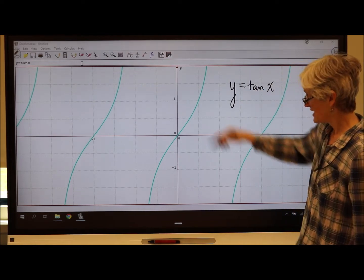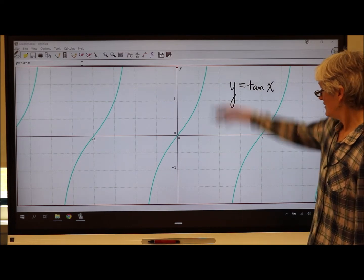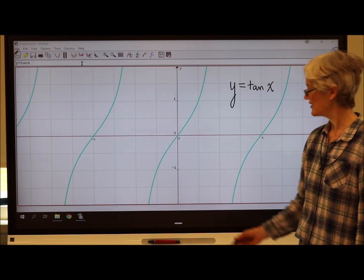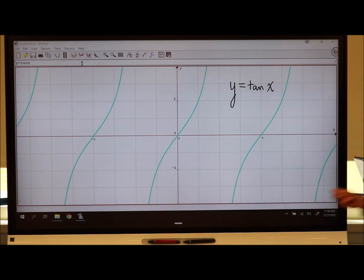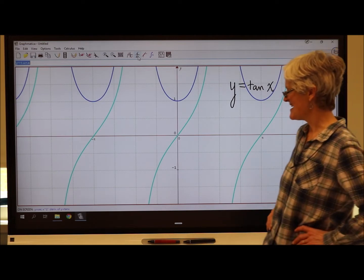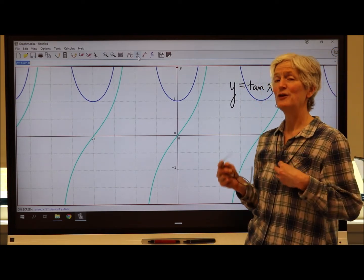Here's y equals tan of x. We've got a whole bunch of vertical asymptotes where the tangent is undefined. So think about what that derivative is going to look like. This is a weird one. Drum roll, please. Boom. Wow. What the heck is that?